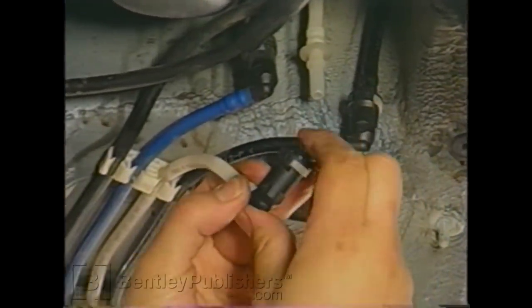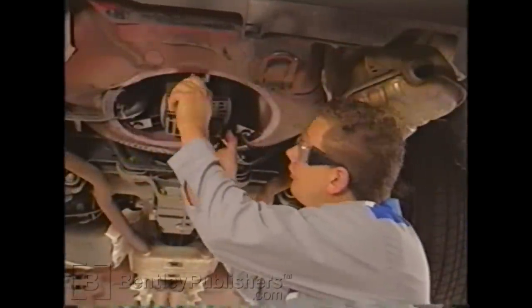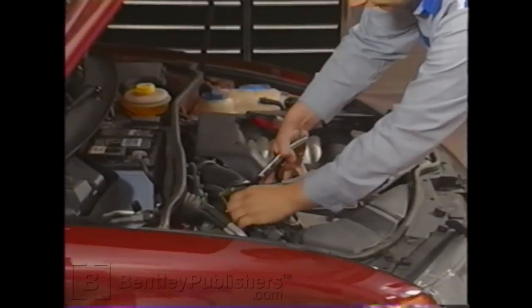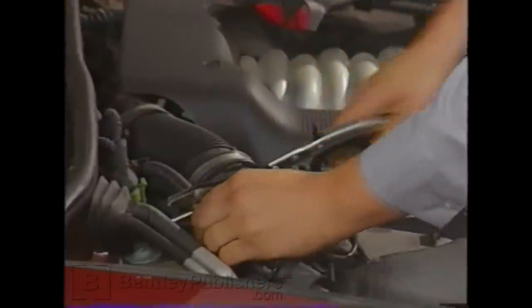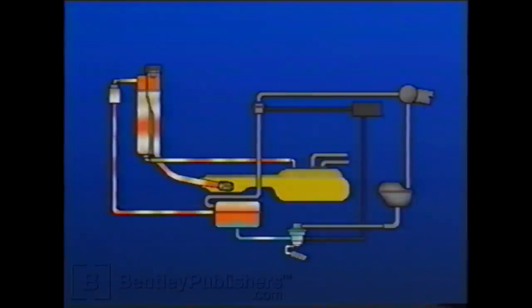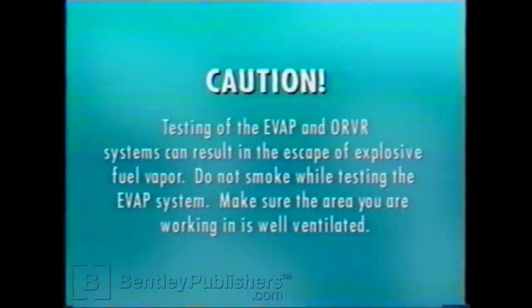Now let's take a look at how to fix the system. Due to different EVAP system designs and part locations, it is not possible to show a single comprehensive test in this video. However, we will give you some guidelines — the procedures discussed only apply to vehicles with an active leak detection system. Caution: testing of the EVAP and ORVR systems can result in the escape of explosive fuel vapor. Do not smoke while testing the EVAP system, and make sure the area you are working in is well ventilated.